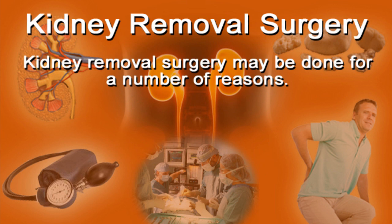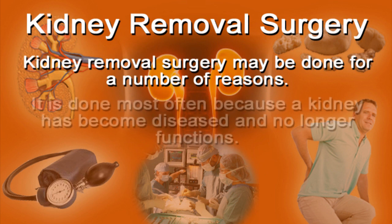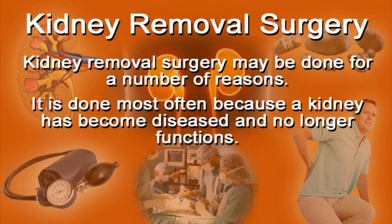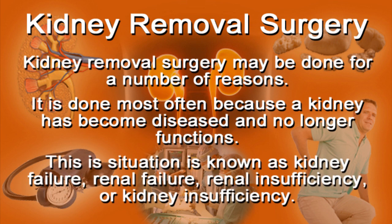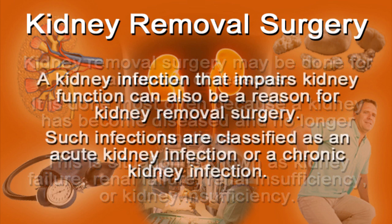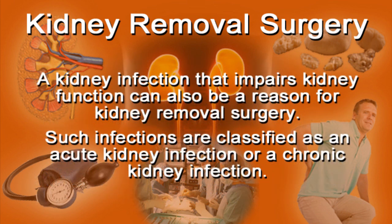Kidney removal surgery may be done for a number of reasons. It's done most often because a kidney has become diseased and no longer functions. This is a situation known as kidney failure, renal failure, renal insufficiency, or kidney insufficiency. A kidney infection that impairs kidney function can also be a reason for kidney removal. Such infections are classified as an acute kidney infection or a chronic kidney infection.